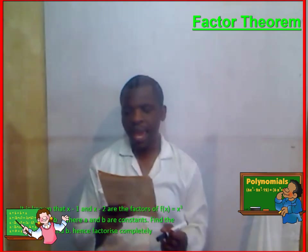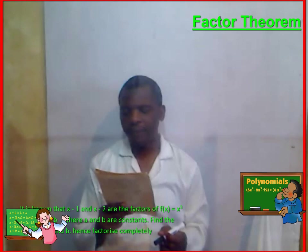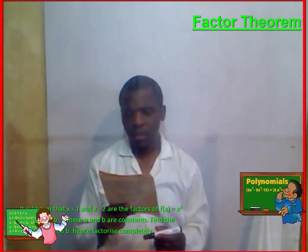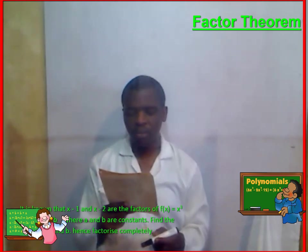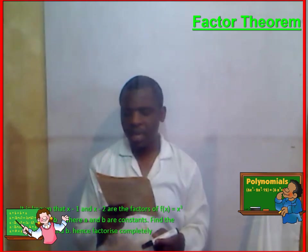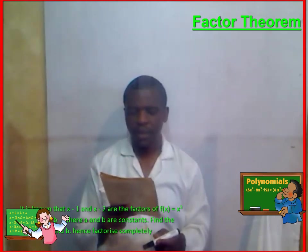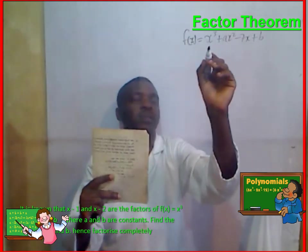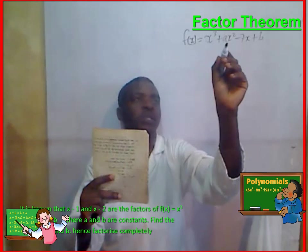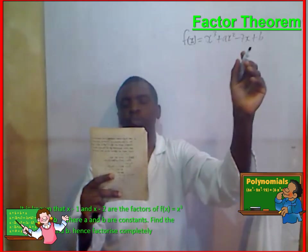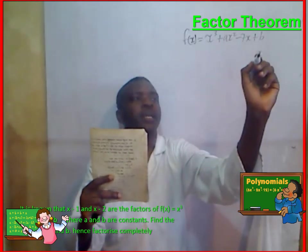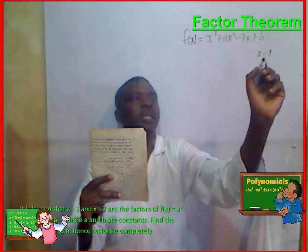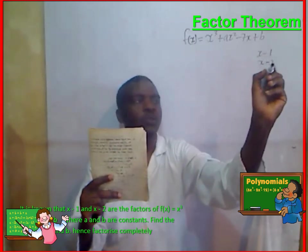It is known that x minus 1 and x minus 2 are the factors of f of x equals x cubed plus ax squared minus 7x plus b, where A and B are constants. Find the values of A and B. f of x equals x cubed plus ax squared minus 7x plus b, where x minus 1 and x minus 2 are factors.